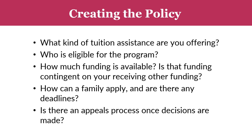Whenever you are sharing information about your tuition assistance policy, you should include as many details as possible. This helps families understand what you are offering and eliminates confusion and potential misunderstandings. You should detail exactly what kind of tuition assistance you are offering, who is eligible, how much funding is available and if it is contingent on other funding, how a family can apply and whether there are deadlines, and if there is an appeals process once decisions are made.